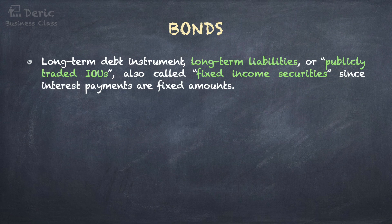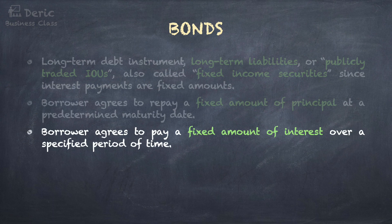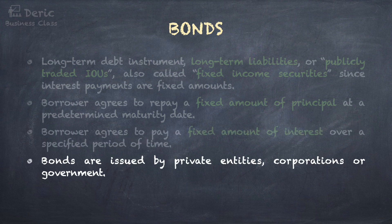For purchasing bonds, investors will receive two types of income from the borrower or the issuing firm. First, the borrower agrees to repay a fixed amount of principal at a predetermined maturity date. Second, the borrower agrees to pay a fixed amount of interest over a specified period of time. For most cases, bonds are issued by private entities, corporations, or government.